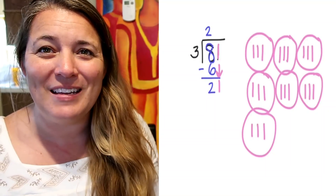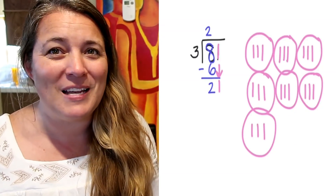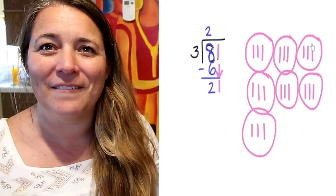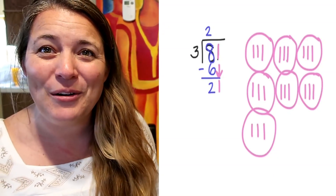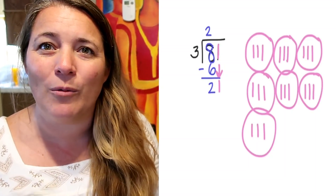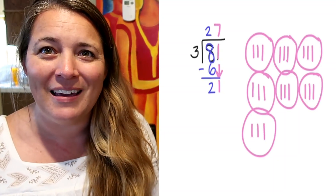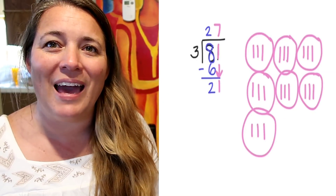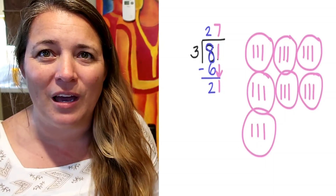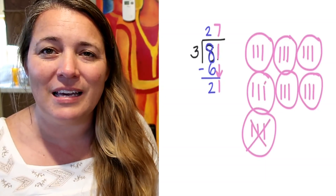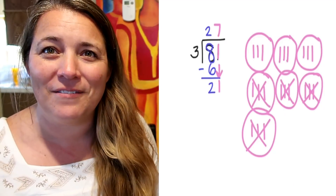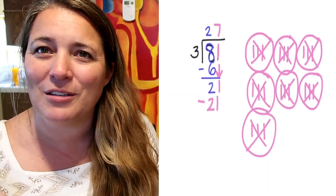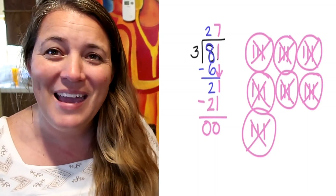If we look at this, we see that we have a perfect amount of groups with nothing left over. Let's count up our groups: 1, 2, 3, 4, 5, 6, 7 groups. At the top we need to put 7, showing we are using 7 groups of 3. Then: 3, 6, 9, 12, 15, 18, 21 — take that 21 away. 21 minus 21 is 0. You just divided!